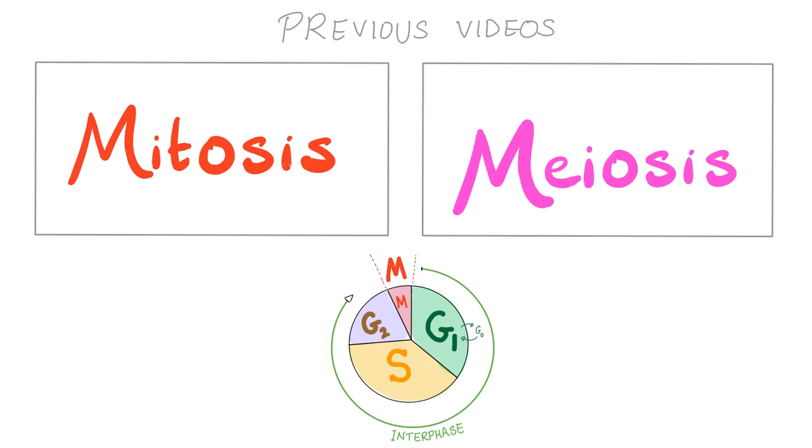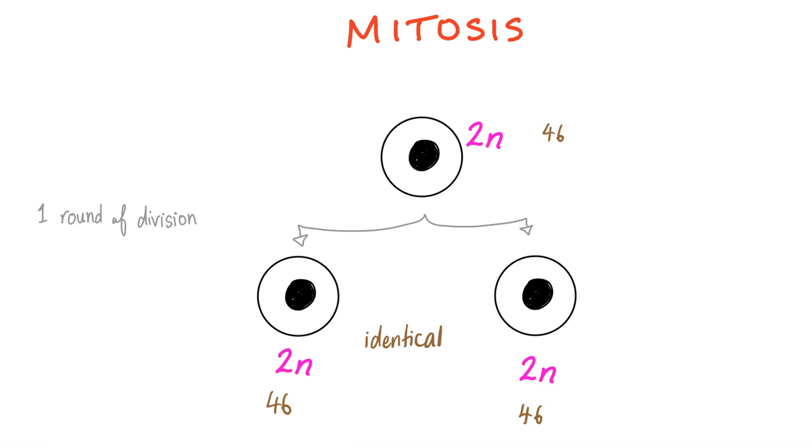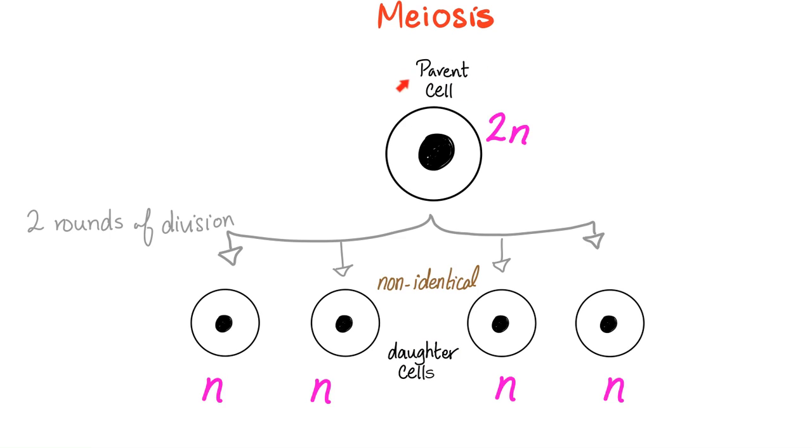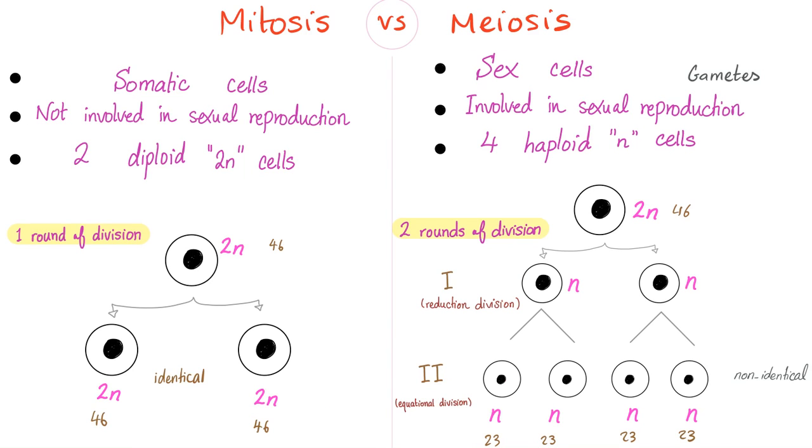In previous videos in this playlist called biology, we have talked about mitosis and meiosis. In a nutshell, mitosis will give you two identical daughter cells. And they are identical to the parents. This was diploid. This is still diploid. Meiosis has two rounds of division. But the end result is four non-identical daughter cells. And they are only haploid. But the parent was diploid. That's why meiosis is known as reduction division. The difference between mitosis and meiosis was discussed in previous videos.